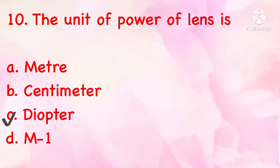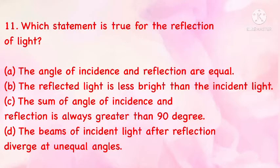The unit of power of a lens is: (a) meter, (b) centimeter, (c) diopter, (d) m⁻¹. The correct answer is (c): diopter.